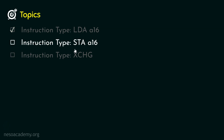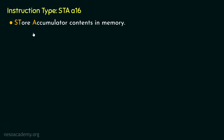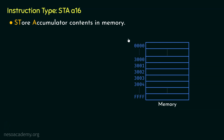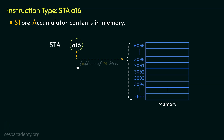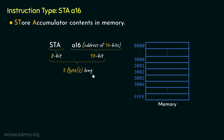Let's now learn about the instruction type STA A16. In this instruction the mnemonic STA stands for 'store accumulator contents in memory.' So clearly this is the reverse of the previous instruction. Now in memory, all addresses are of 16 bits. Therefore from the instruction STA A16, the A16 refers to the 16-bit addresses of the memory. Just like the previous instruction type, STA is going to occupy 8 bits of memory space and A16 is going to occupy 16 bits of memory space. So this instruction also falls under the 3-byte long instructions category.